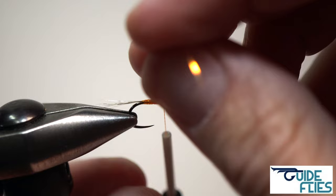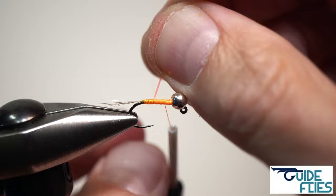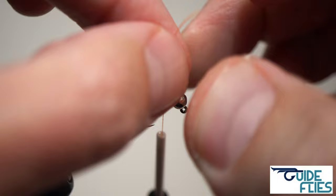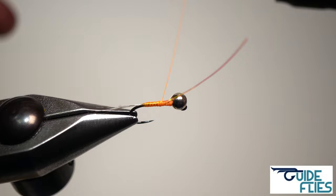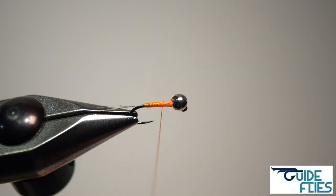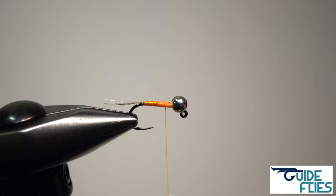Take your time with this step. If you're not used to working with this material it's pretty slippery so you can use some hackle pliers if you want or the rotary function of your vise if you have a rotary vise. For tying purposes here I'm just taking my time and going hand over hand. I'll just trim that down there. Now I'm going to bring my orange thread up to the back of the bead and just whip finish that off.